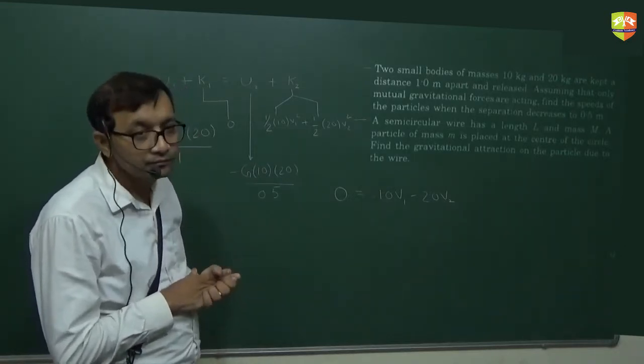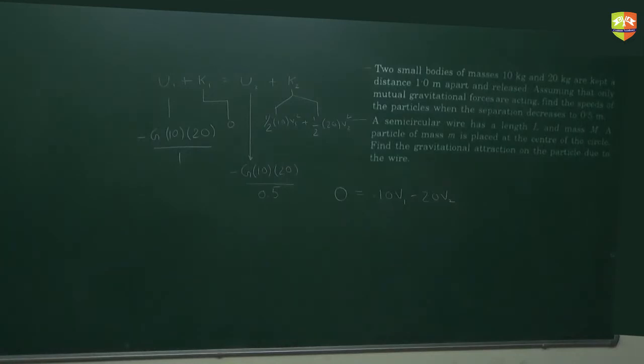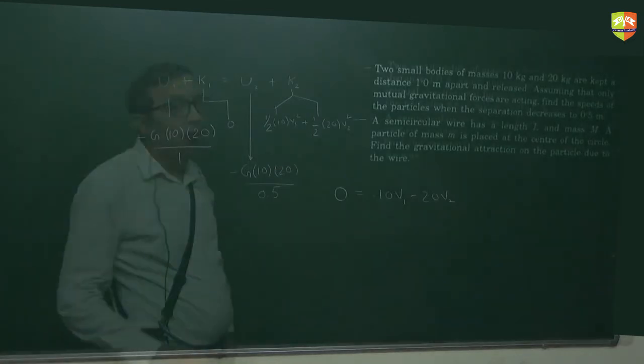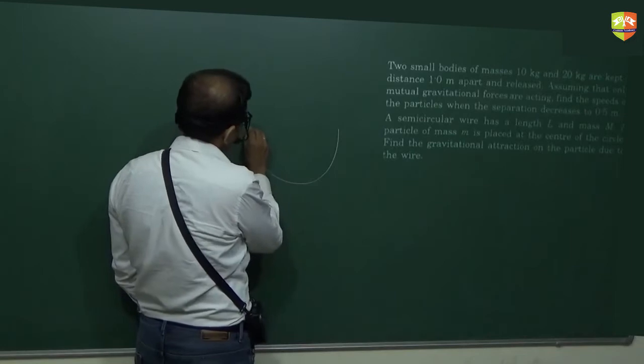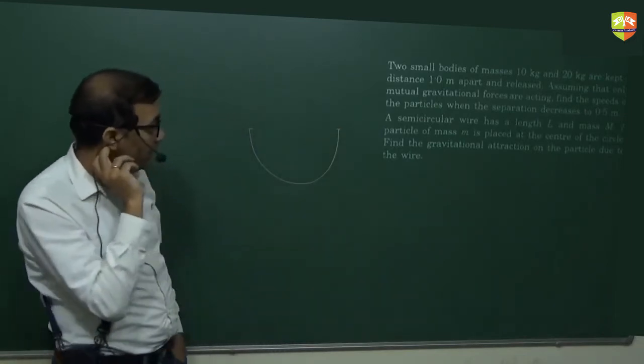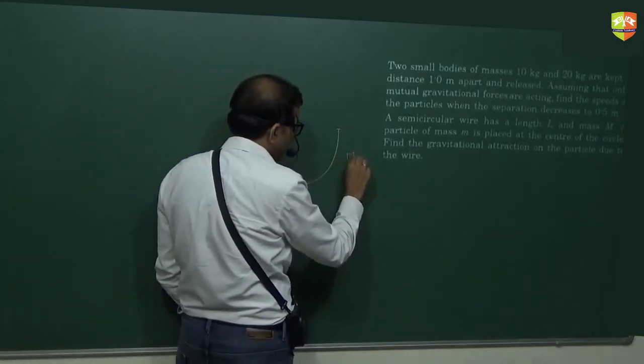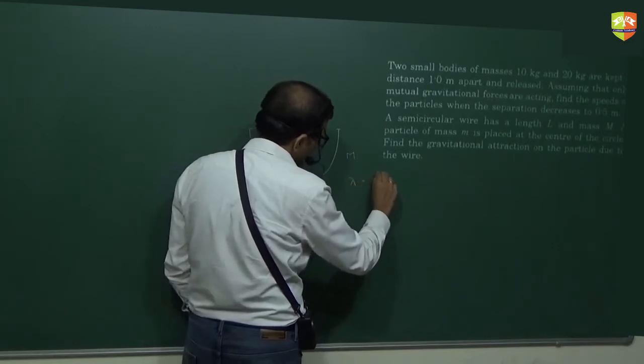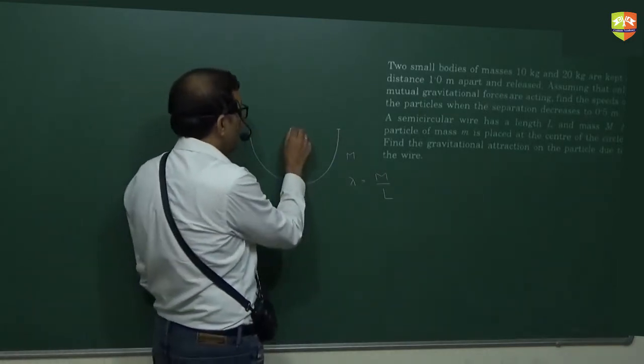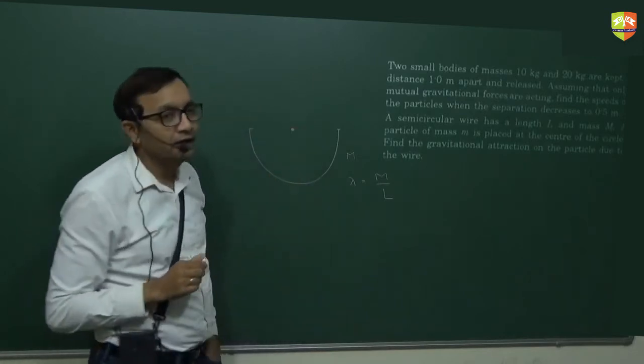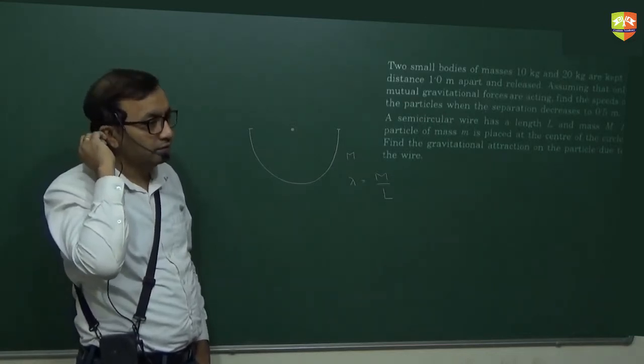Second one. Second one involves integration a little bit. Semi-circle wire of length L and mass M. Total mass is M. Mass per length will be M by L. A small mass is kept over here. Where do you think the net force will be? What degree downwards? Why?